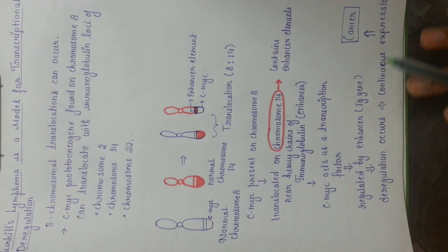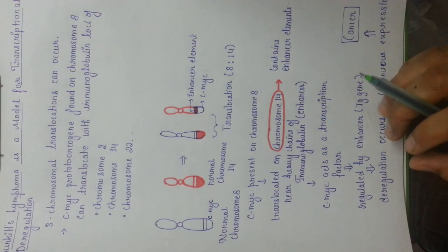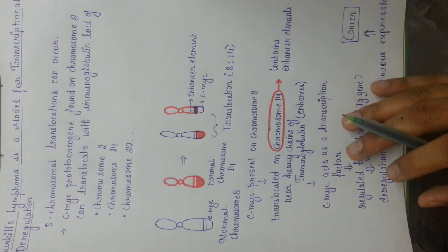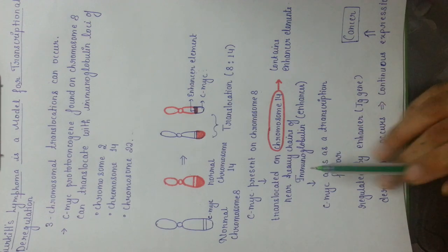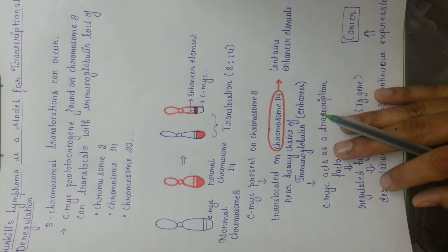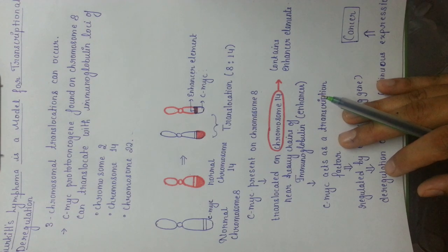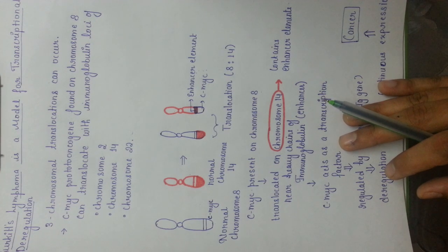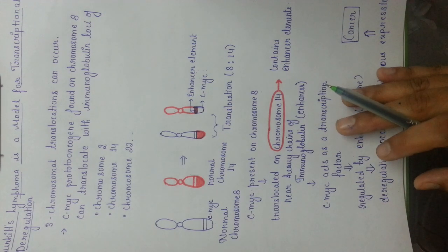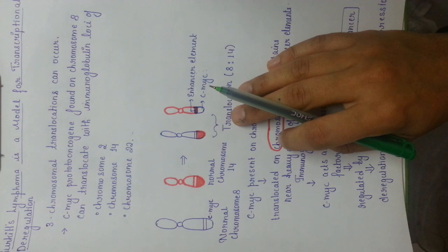So we have discussed what the basic proto-oncogenes are and what the major mechanisms are related to the translocation mechanism of cancer. We discussed Burkitt's lymphoma and the factors leading to this kind of cancer. In my next video, I am going to explain the second kind of cancer — chronic myelogenous leukemia — and the protein structure alteration mechanism taking place in it.